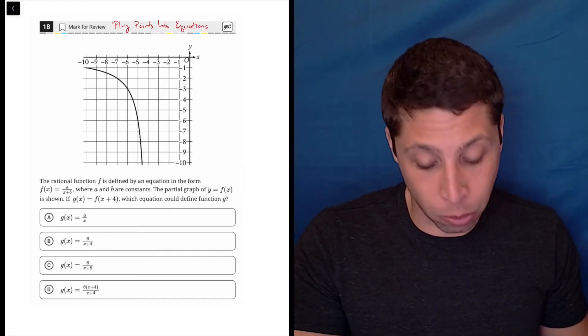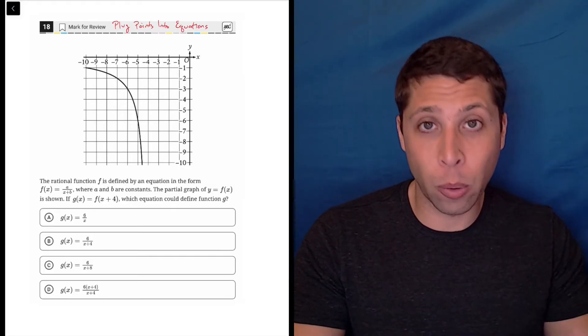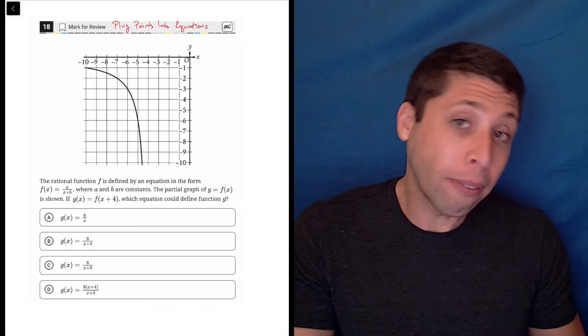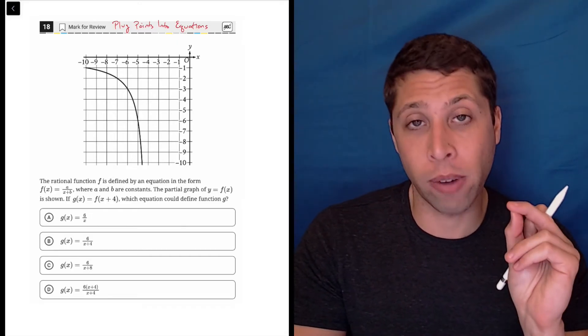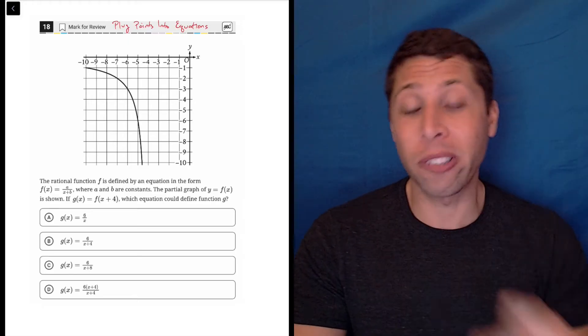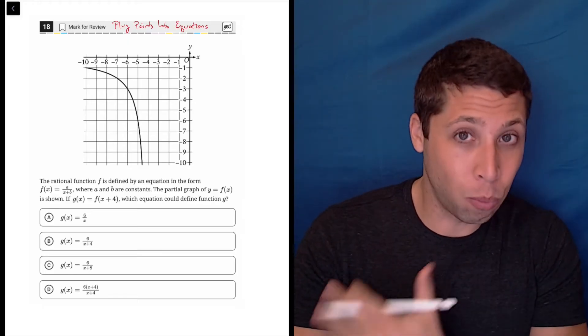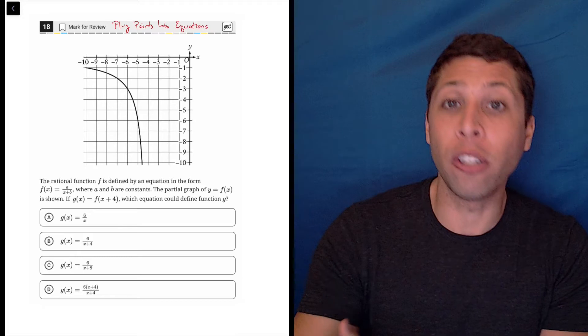The reason I know it's plug points into equations is just look, they give us a bunch of equations in the answer choices, and a graph is basically a collection of points. So odds are good I'm going to pull some point off this graph. There's a story here, we've got to do something to the point, but it's going to get changed in a way that then we can use the equations with it.